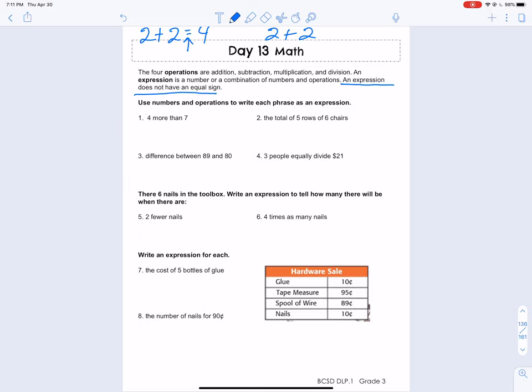For example, number one, four more than seven. Okay. Four more than seven. Well, to me, that sounds like seven plus four, because I'm starting with seven and four more than that.